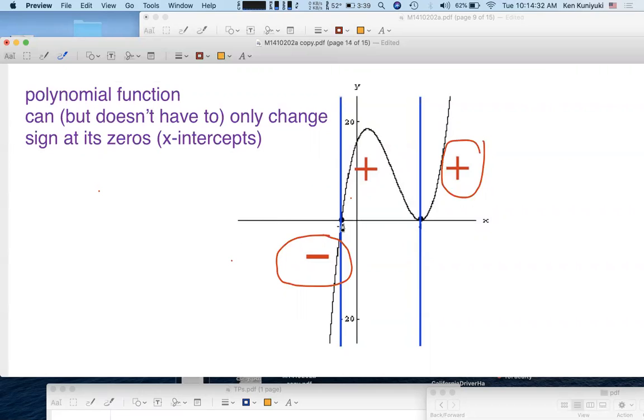If the multiplicity is odd, then the graph cuts like a snake, and the function value, the y-coordinate, changes sign, here from negative to positive. If the multiplicity is even, then the graph bounces like a bull off the x-axis, and we stay from positive to positive, with zero in the middle.